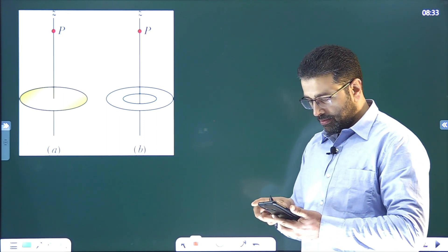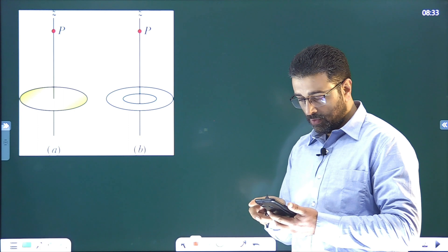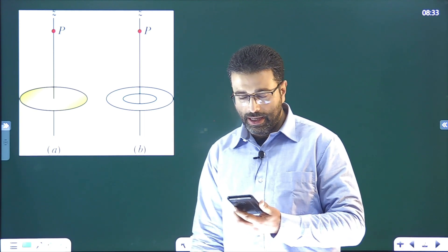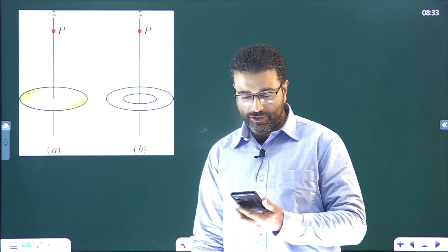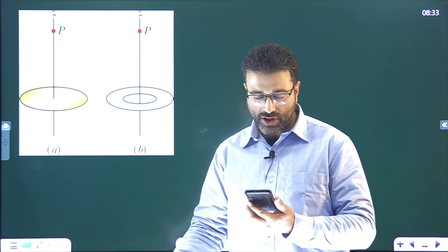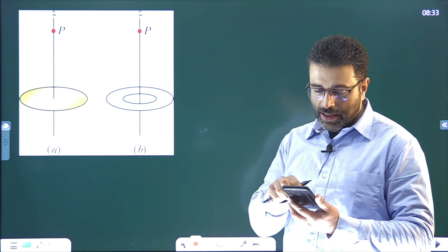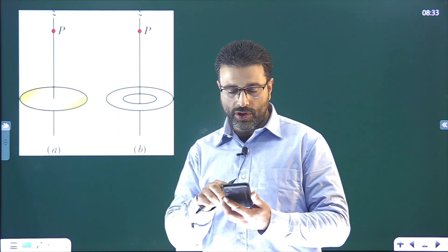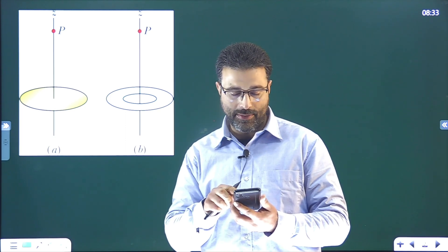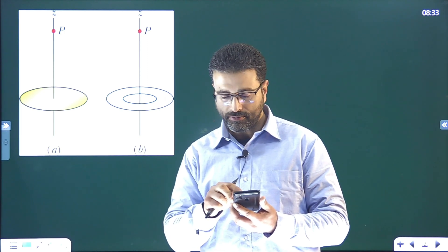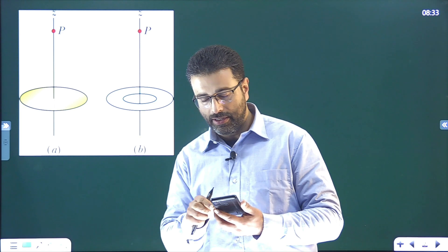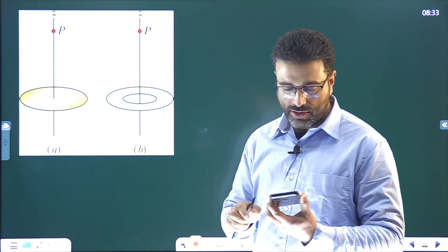Problem 37: Suppose you design an apparatus in which a uniformly charged disk of radius r is to produce an electric field. The field magnitude is most important along the central perpendicular axis of the disk at a point P at a distance z equal to 2r from the disk. Post analysis suggests that you switch to a ring of same outer radius r but with an inner radius r/2. Assume the ring will have the same surface charge density as the original disk. By what percentage will you decrease the electric field magnitude at P?